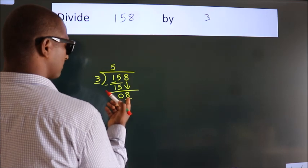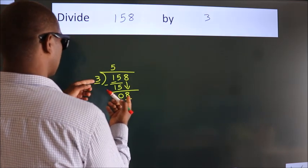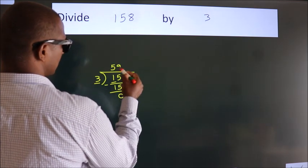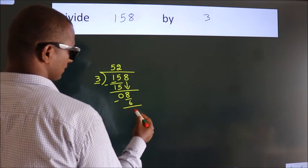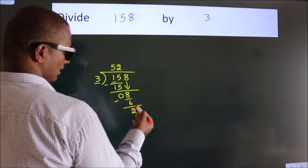So, 8. A number close to 8 in 3 table is 3 times 2, 6. Now, we subtract. We get 2.